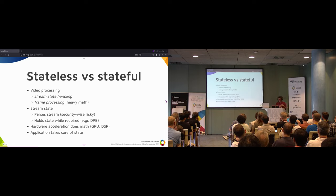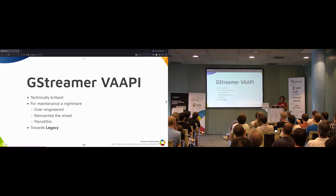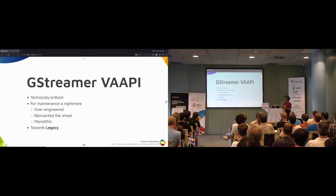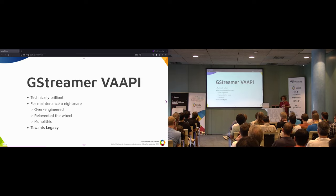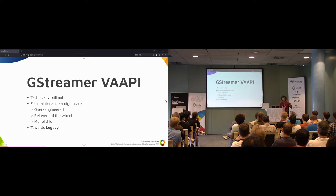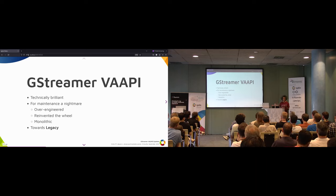The application takes care of the state, DPB, and so on. This is when the story begins with the GStreamer VA-API implementation, which does all the state handling and DPB management, and pushes frames into the GPU or dedicated hardware. The problem is that while it was technically brilliant — the first of its kind — it turned into a nightmare for maintenance because it was over-engineered. They reinvented the wheel with their own GObject implementation and it was very monolithic. If you wanted to extract the state handling for a codec, it was impossible because they used their own data structures. So now it's heading toward legacy or deprecation.